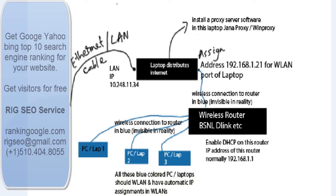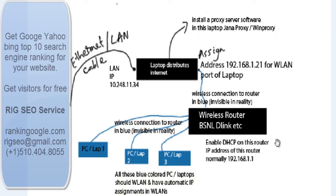I am showing you how you can distribute an Ethernet cable modem internet connection via Ethernet or LAN to your laptop via a wireless router. This connection can be distributed among several other PCs, laptops, or mobile devices via wireless router. This is the main LAN connection.